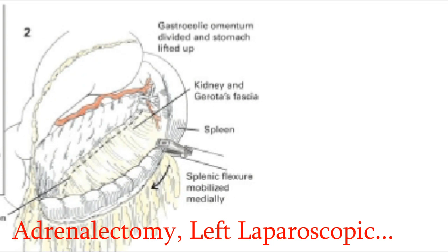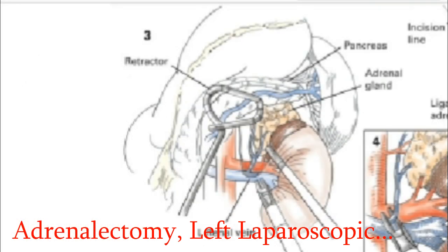It is not necessary to mobilize the spleen. The lesser sac is entered and the retroperitoneal structures are identified. The lateral adrenal is exposed along the posterior surface. The anterior peritoneum is incised to expose the upper portion of the adrenal. The dissection is continued under the anterior peritoneum while the assistant holds the pancreas anteriorly. This dissection should be continued as far superiorly as possible.